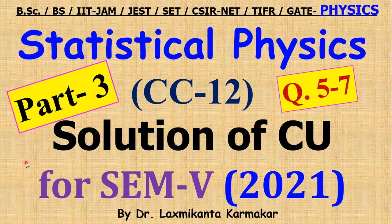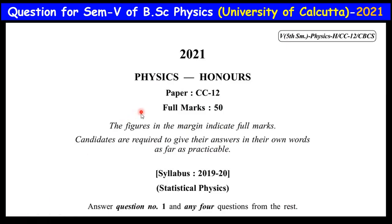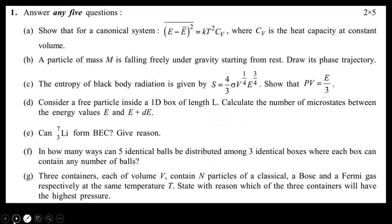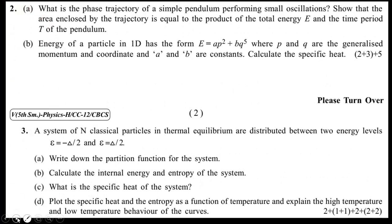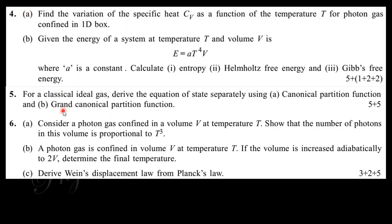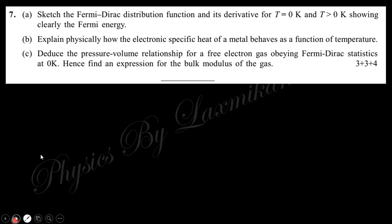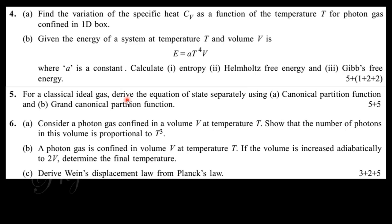Hello, welcome to everyone. This is part number three for the solution on statistical physics for semester five, CC12. We already discussed questions one through four in two previous parts, which were asked in the 2021 exam of University of Calcutta in Physics Honours. In this part we will discuss questions five, six, and seven. I would like to request all of you to solve these questions first on your own, then continue the video to watch the solution.